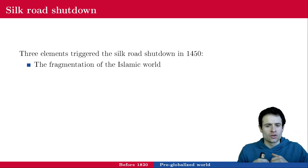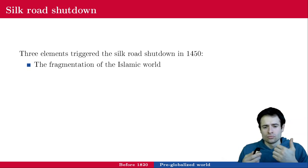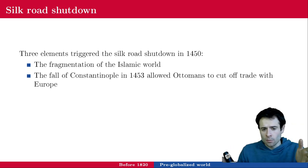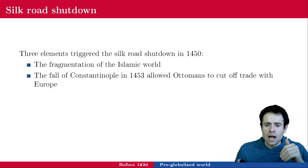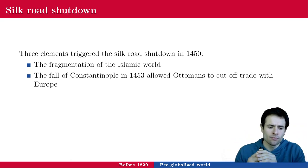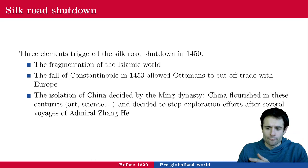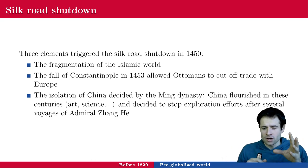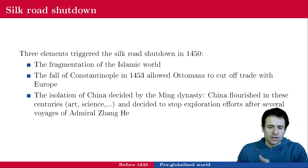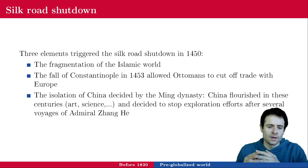Three elements triggered the Silk Road shutdown around 1450: the fragmentation of the Islamic world due partly to the Black Plague; the fall of Constantinople in 1453, which allowed the Ottomans to cut off trade with Europe; and the Ming dynasty in China, which isolated itself after several exploration trips by Admiral Zheng He.